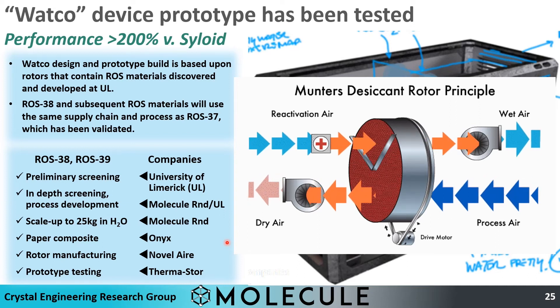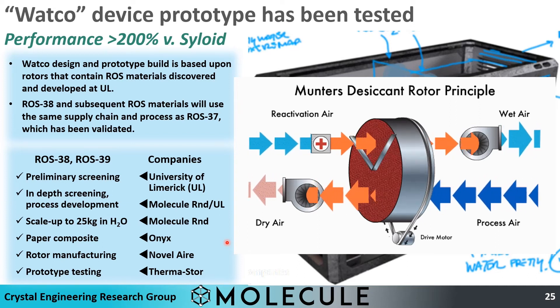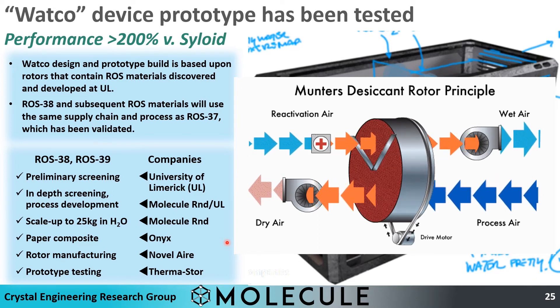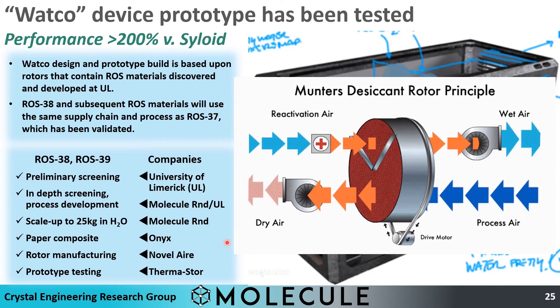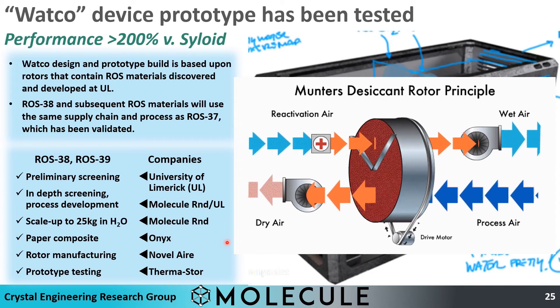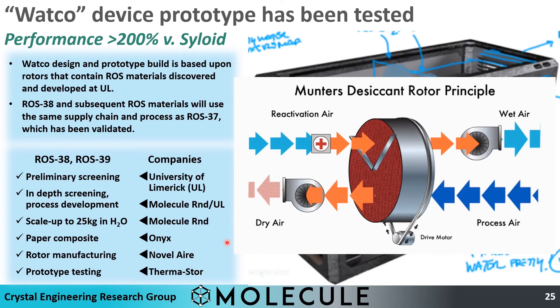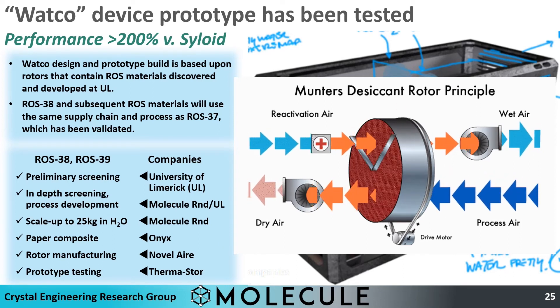The end performance and mechanism of water capture and release is a version of what is known as a Munters desiccant wheel — the large-scale dehumidification technology used worldwide, including in large building HVAC systems. In essence, a rotating wheel works continuously, sorbing on one side as humid air passes through, while water is released using heat on the other side.